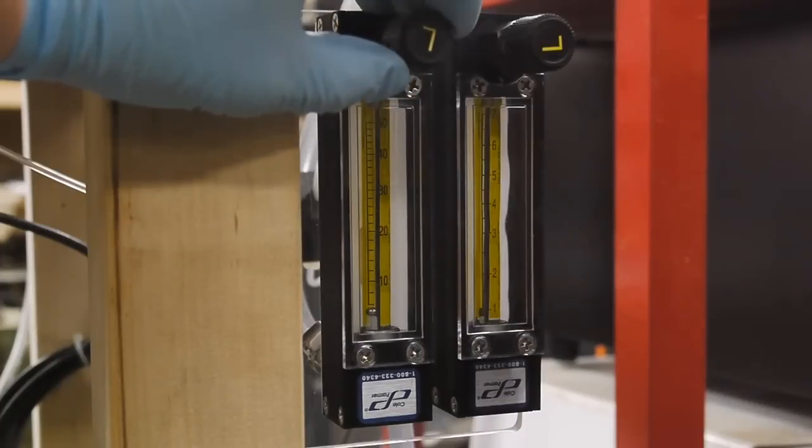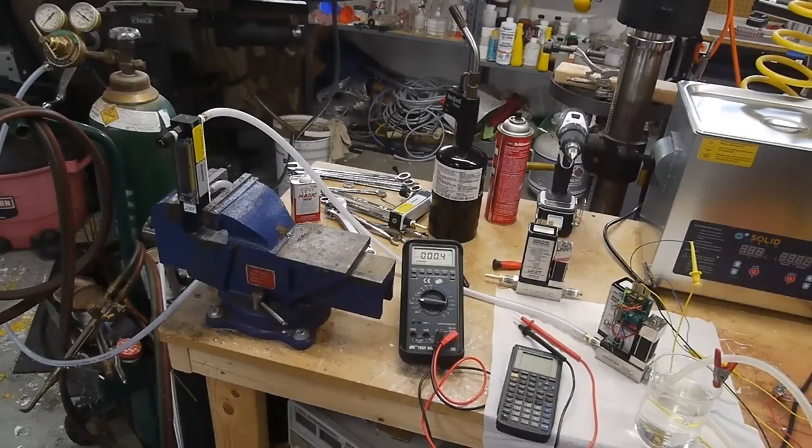So what these meters are actually measuring is the volume flow rate. They don't actually know how dense the gas is and if the pressure goes up or the temperature changes then the density will change and a different amount of gas will flow through the meter for a given flow rate.